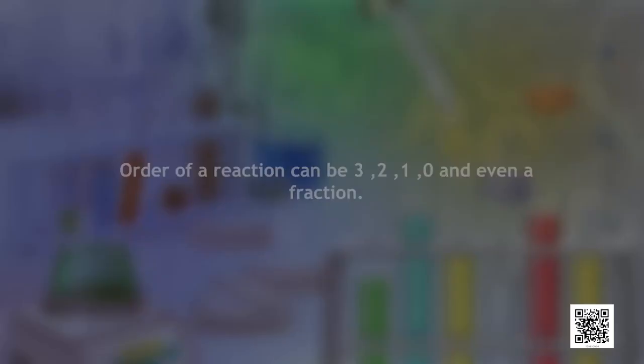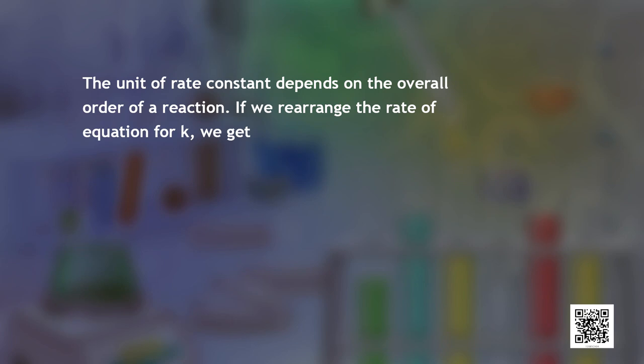Order of reaction is defined as the sum of the powers to which the concentration terms are raised in the rate law expression. Order of reaction can be 0, 1, 2, 3 and even a fraction. It is important to note that the order of a reaction can only be determined experimentally and not from the coefficients of the balanced equation.